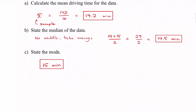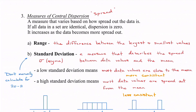Moving on, we're going to look at measures of dispersion. The word dispersion means spread — basically how far the data values are spread out. It's a measure that varies based on how spread out the data is. If all data in a set are identical, the dispersion would be zero. It increases as the data becomes more spread out. For central dispersion, the two things are range and standard deviation.